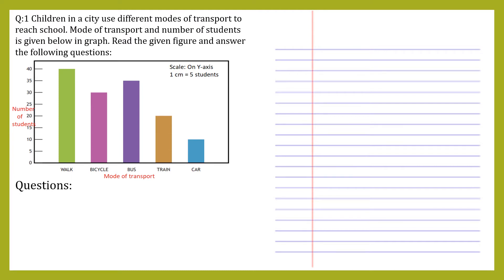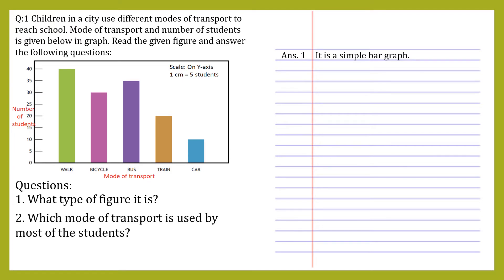First question: what type of figure is it? You can see a bar graph which has only one quantity — the bar graph is not divided into different parts. Such a type of bar graph is called a simple bar graph. You will be learning different types like joint bar graph and percentage bar graph in coming years. So the answer is: it is a simple bar graph.